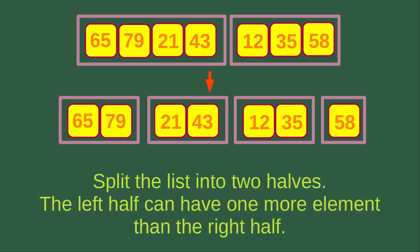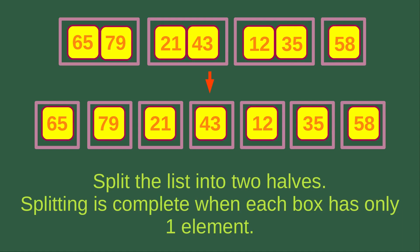We still have to maintain the principle that the left half can have one more element than the right half during the splitting process. We can continue the splitting for each of the boxes that contains two elements. After the splitting, each box has only one element, and the splitting process is now complete.